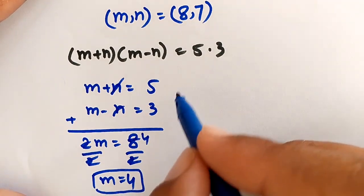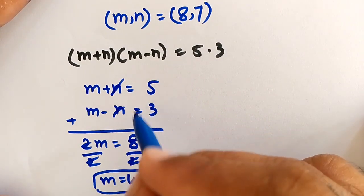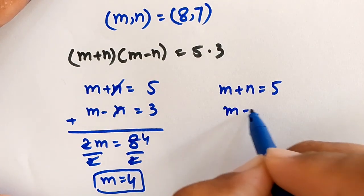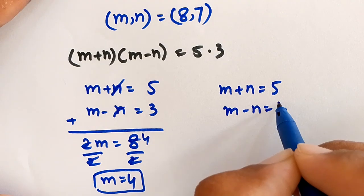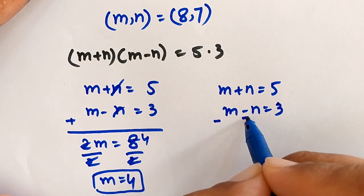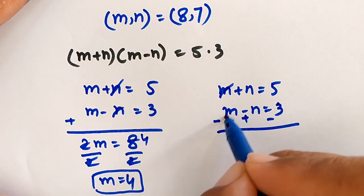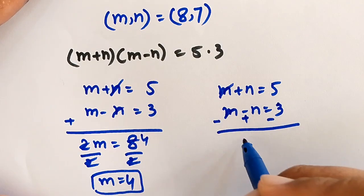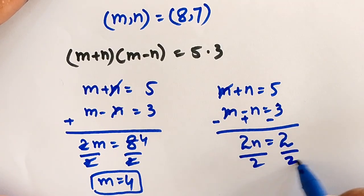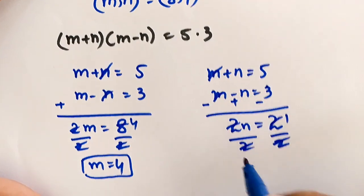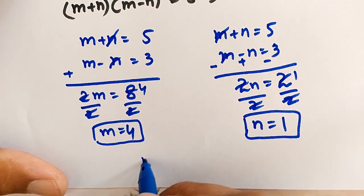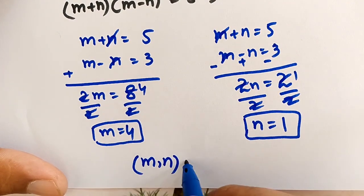To find n in Case 2, we subtract the equations. The m terms cancel: 2n = 5-3 = 2. Dividing both sides by 2 gives n = 1. So from Case 2, (m, n) = (4, 1).